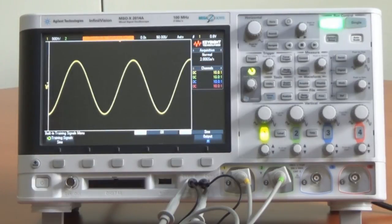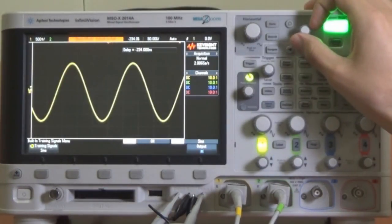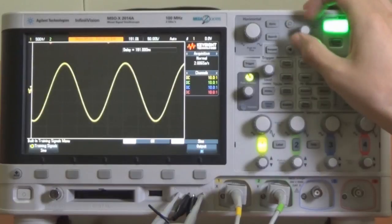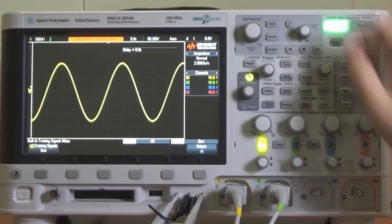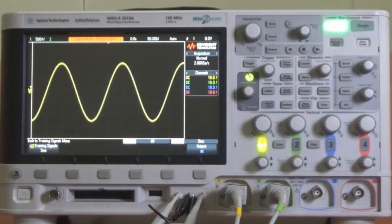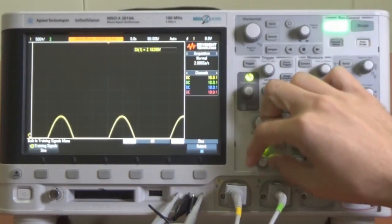Ahora si deseamos mover la forma de onda a la izquierda o derecha vamos a girar la perilla de posición horizontal. Si presionamos la perilla de posición horizontal la forma de onda se configurará nuevamente en la posición 0 o centro de la pantalla. De igual manera, si deseamos mover la forma de onda hacia arriba o hacia abajo giramos la perilla de posición vertical que, como podemos apreciar, hay una por cada canal.